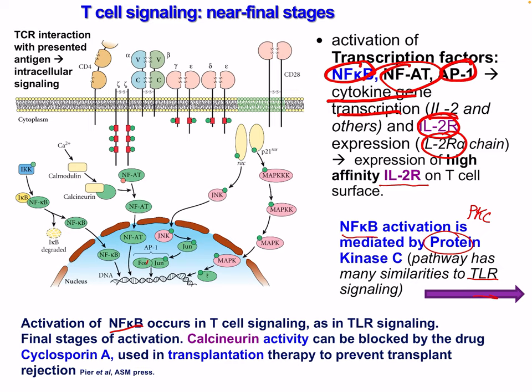The activation of NF-κB occurs in T cell signaling similarly to TLR signaling. The final stages of activation involve calcineurin activity, which can be blocked by certain drugs like cyclosporin A used in transplantation therapy to prevent transplant rejection.